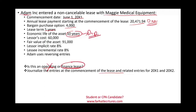The lessor's cost is $60,000 — we don't care about this for now because we are doing accounting for the lessee. The fair value of the asset is $91,000, meaning if Maggie wants to sell it today she would charge $91,000. The lessor's implicit rate is 8%, which is the same as the lessee's incremental borrowing rate, so we will use 8%. And Adam uses reversing entries.